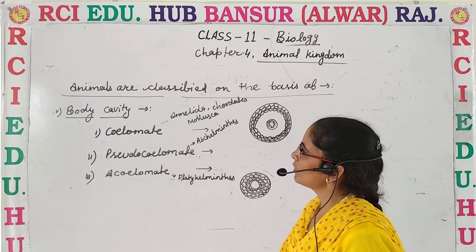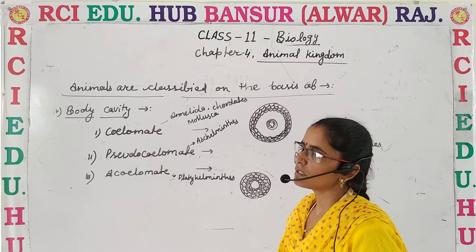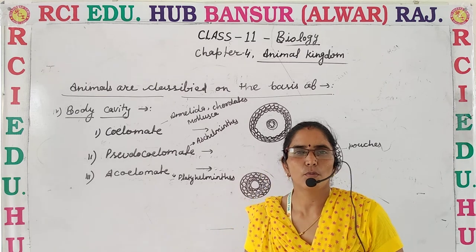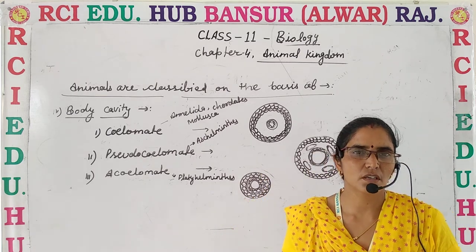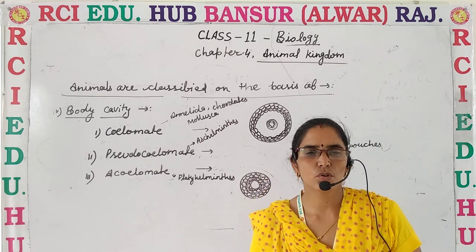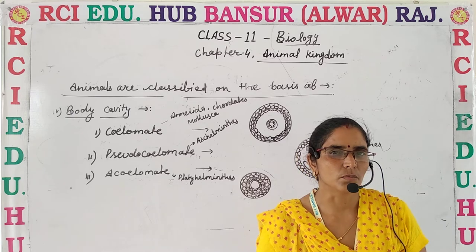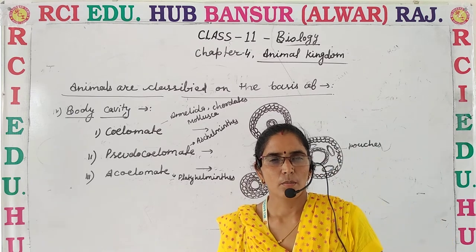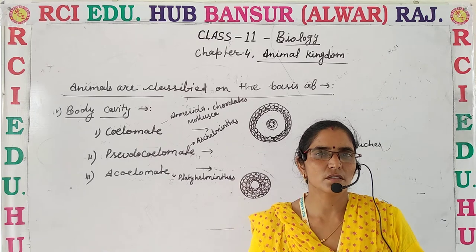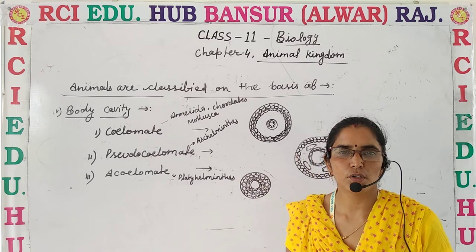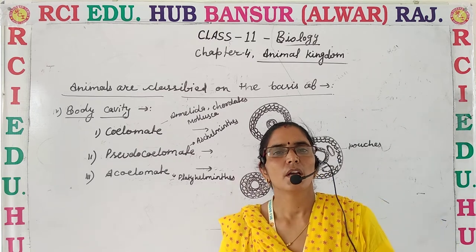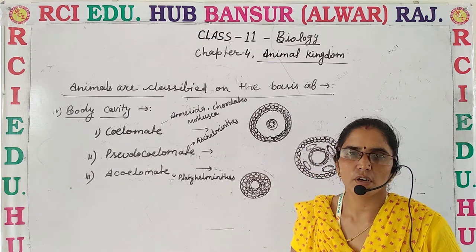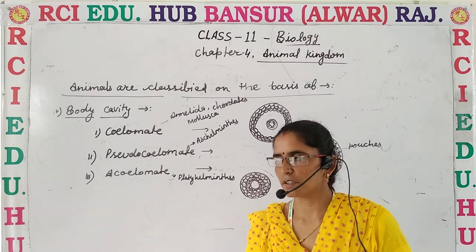After that we also discussed about the germ layers. If the body is composed of three germ layers — ectoderm, mesoderm, and endoderm — the body is known as triploblastic. But if the body is composed of only two germ layers — ectoderm and endoderm — then it is known as diploblastic.